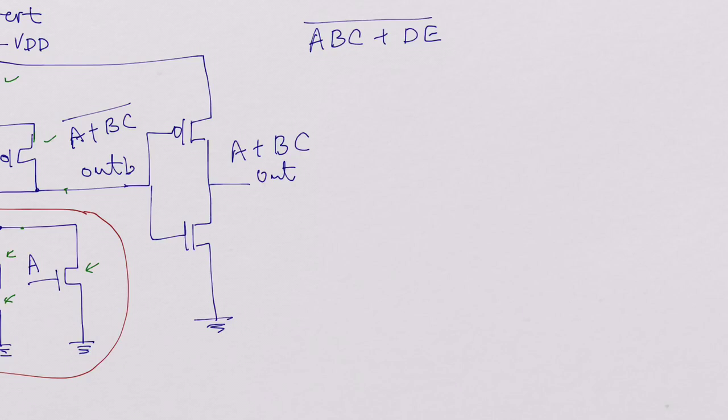So this is two inverts. We have A, B, C AND'd and DE AND'd.